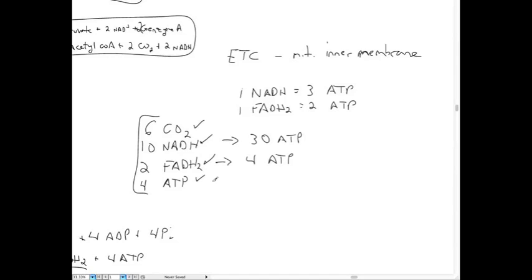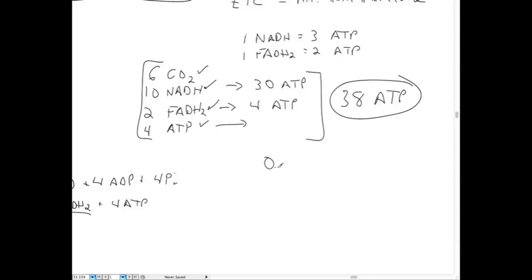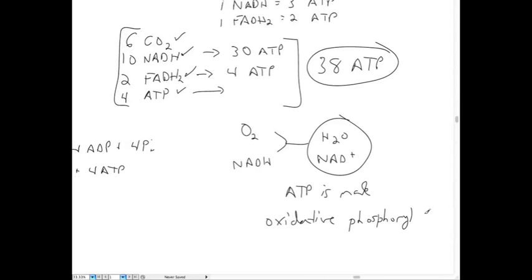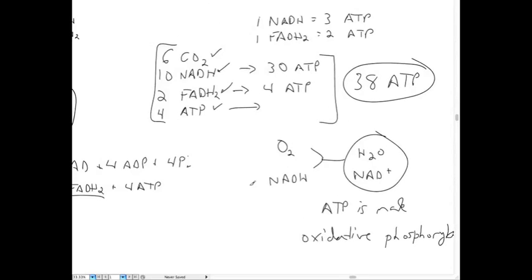Adding it up: 30 ATP from NADH, 4 ATP from FADH2, plus the 4 ATP already from glycolysis and the TCA cycle, gives us 38 total molecules of ATP from complete metabolism of glucose during cellular respiration. This requires oxygen — you're combining oxygen with NADH or FADH2 to produce H2O, regenerating NAD+, and producing ATP. This is what we refer to as oxidative phosphorylation: the synthesis of ATP by oxidation of NADH.